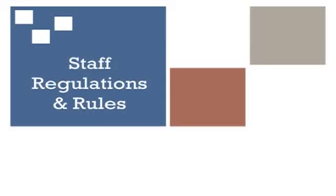Up to this point, we've reviewed values, agendas, competencies, and expectations. What I'd like to do now is give you an opportunity to apply the information that we've covered. In order to do this, you will need the staff regulations and rules that we suggested you have available at the beginning of this program.